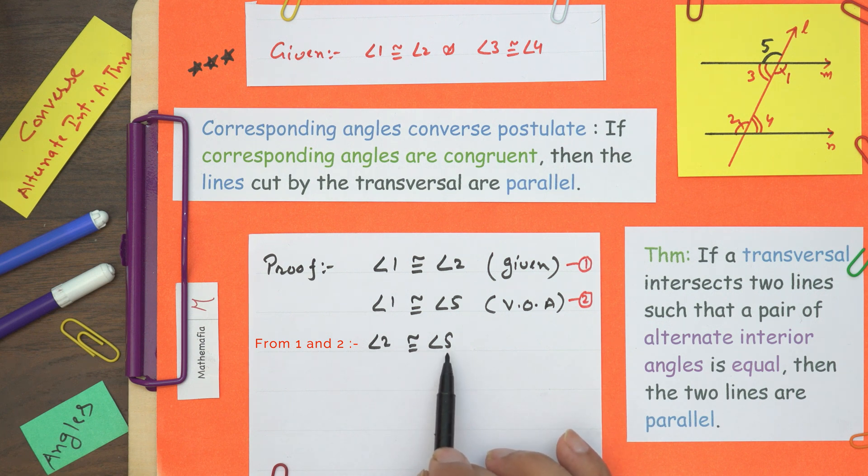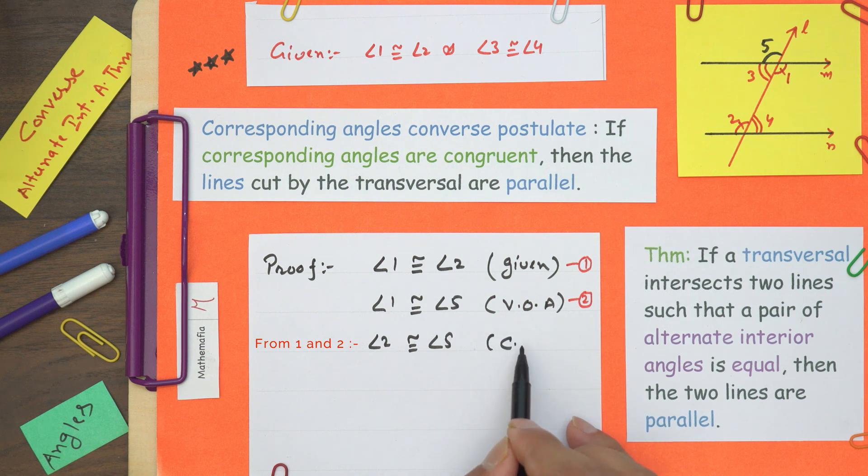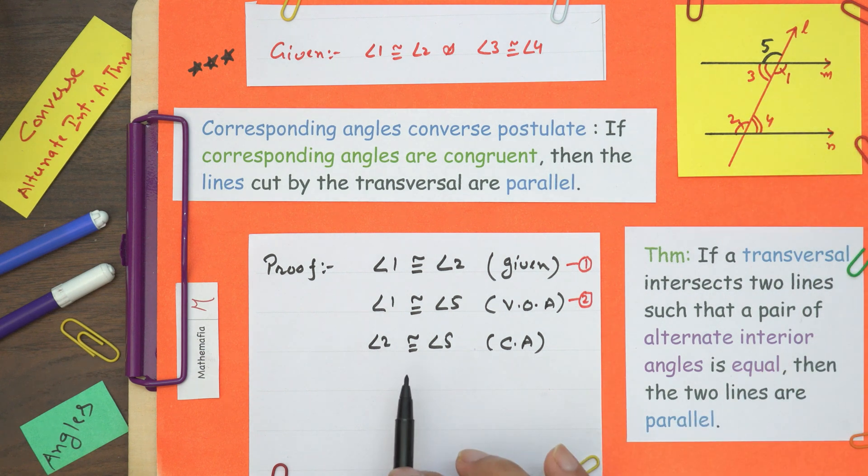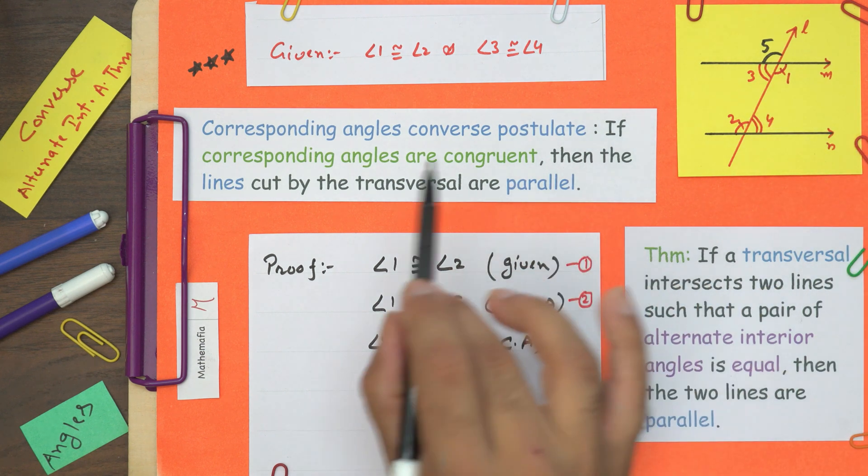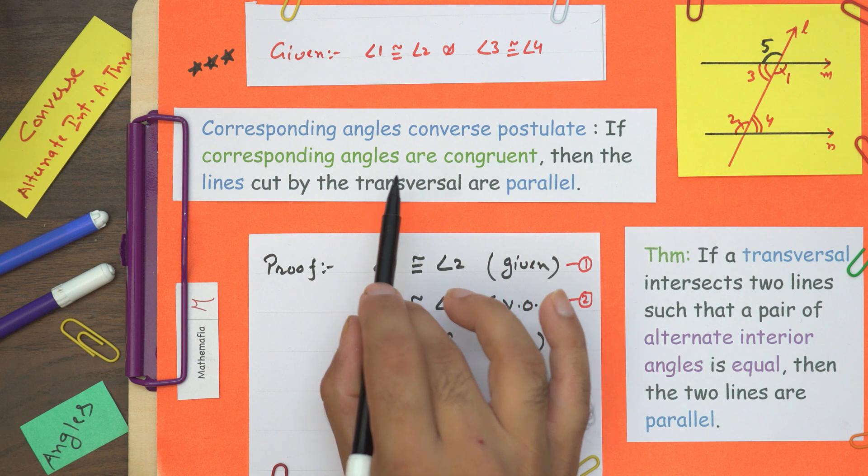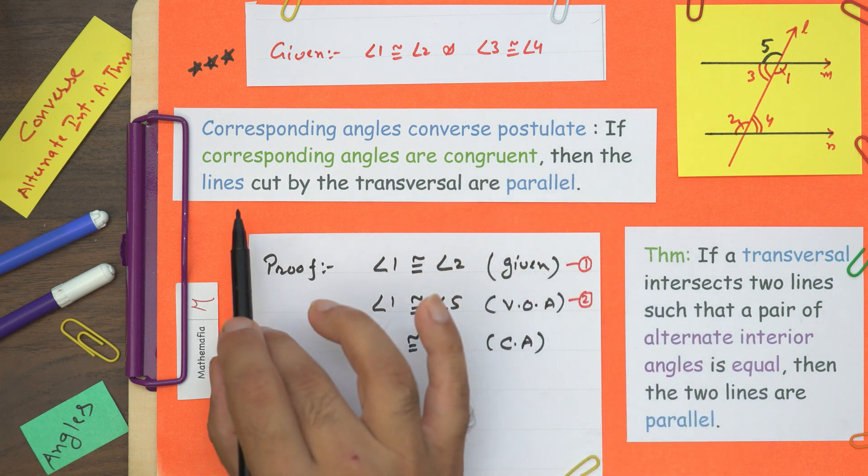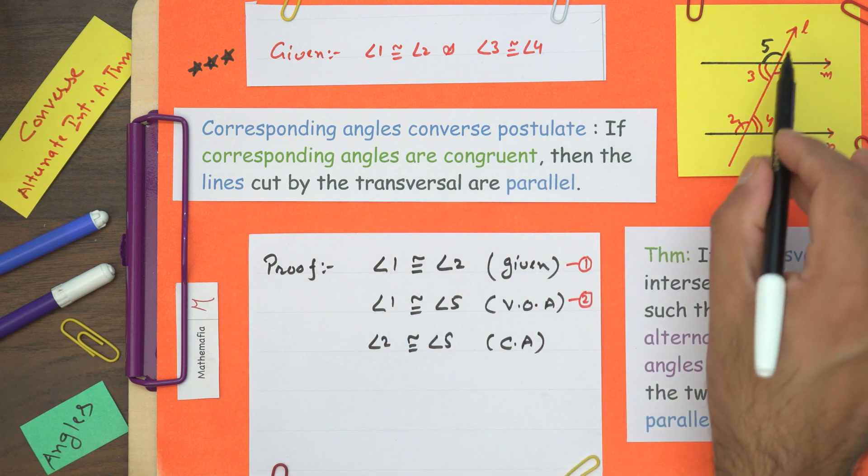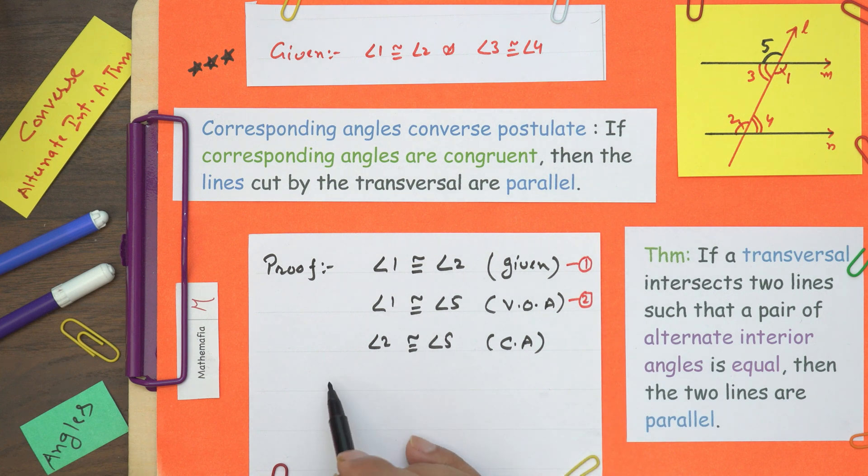Now angle 2 and angle 5, these two are corresponding angles. We just discussed that if corresponding angles are congruent, then the lines that the transversal cuts are parallel.